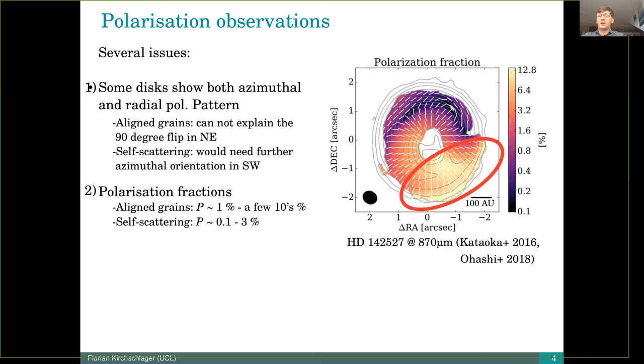This is also due to the polarization fractions. In the south, where you expect elongated grains, you have fractions of up to 12 percent, while in the north, where you have very small polarization degrees of up to 1 percent, which is due to self-scattering.